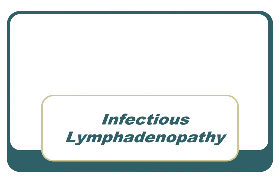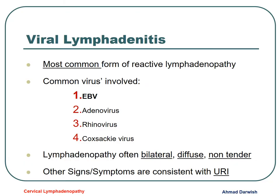Viral lymphadenitis is the most common, with Epstein-Barr virus, but others like Coxsackie, Rhinovirus, Adenovirus, Cytomegalovirus, and so on. Usually lymph nodes due to viral infection affecting the cervical region are bilateral, diffuse, non-tender, and preceded by symptoms and signs of upper respiratory tract infection.